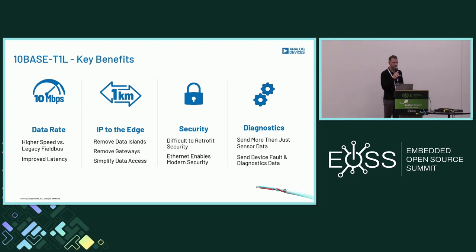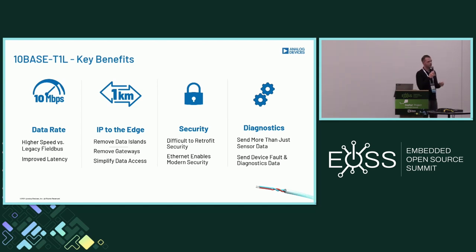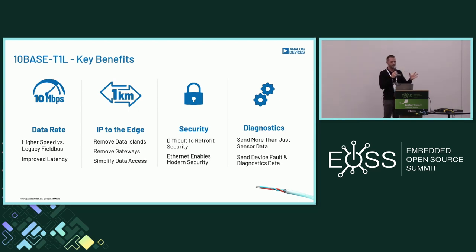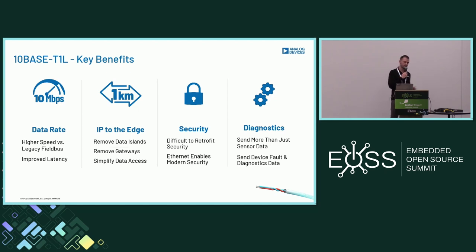Next is security. In the industrial space, as the IT world and the OT world — operational technology, the factory floor — converge, security becomes increasingly important. The ability for external attackers to access OT technology through the IT domain increases, so modern cybersecurity techniques must be deployed to the operational network. Finally, diagnostics: ethernet is full duplex, whereas legacy fieldbus protocols like RS-485 are often half duplex and can only send limited data. With ethernet we open the door to more complex device-centric diagnostic data and even implementing over-the-wire firmware updates.